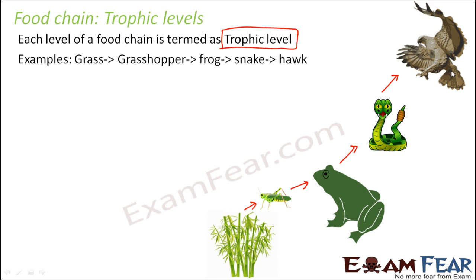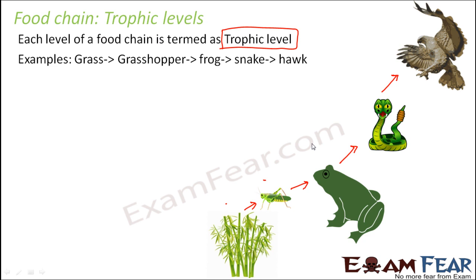A food chain can have more or fewer steps, and any organism that is part of one food chain can also be part of another. For example, a frog doesn't eat only grasshoppers — it can also eat other insects or tiny worms. Similarly, a tiger can eat a deer or a buffalo. So one organism can have multiple food options and can be part of multiple food chains. Each of these levels is termed a trophic level: first, second, third, fourth trophic level.